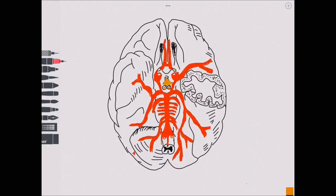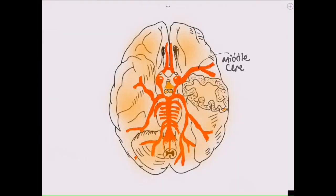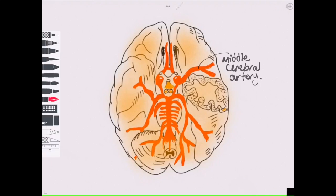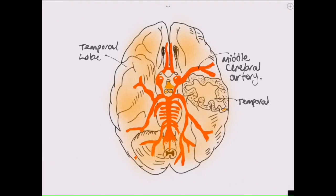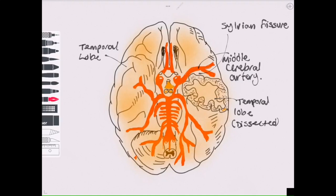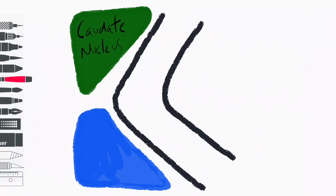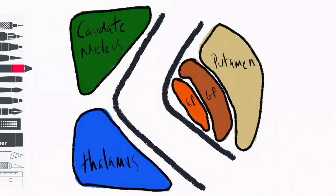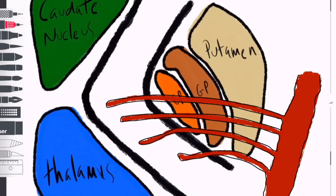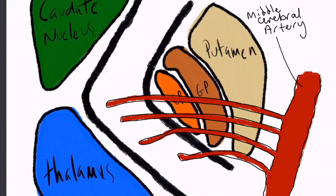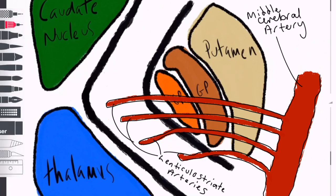We'll begin by talking about the anatomy of the middle cerebral artery. As you can see here, it arises from the anterolateral part of the circle of Willis on the inferior aspect of the brain. As it then passes through the sylvian fissure, also called the lateral fissure, it gives off a number of small branches called the lenticulostriate branches to important deep structures in the brain.